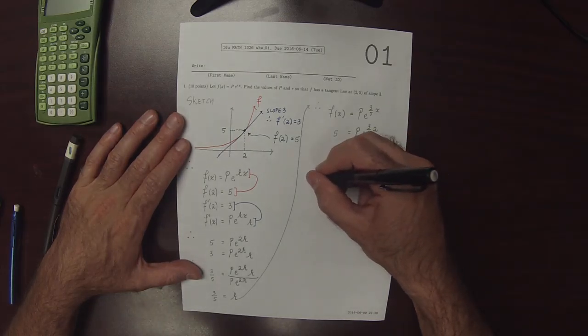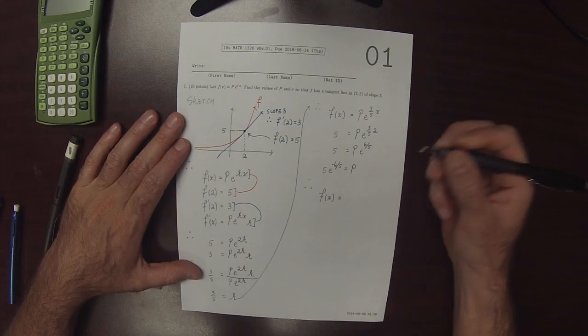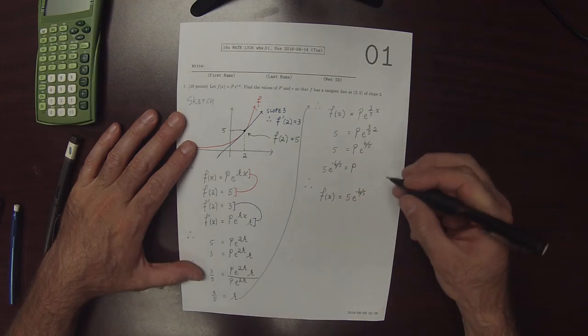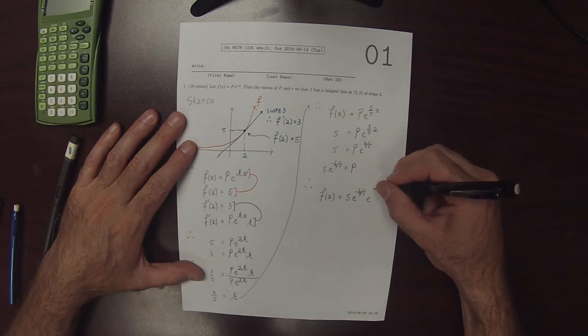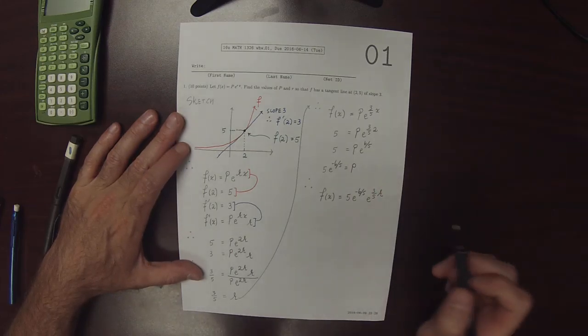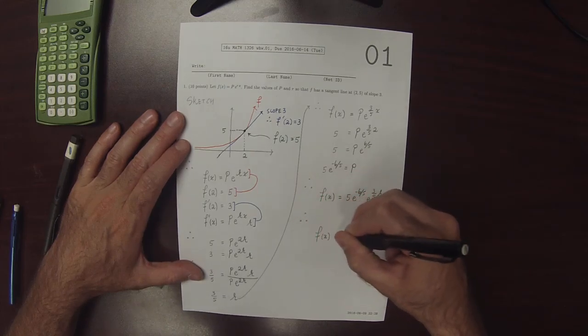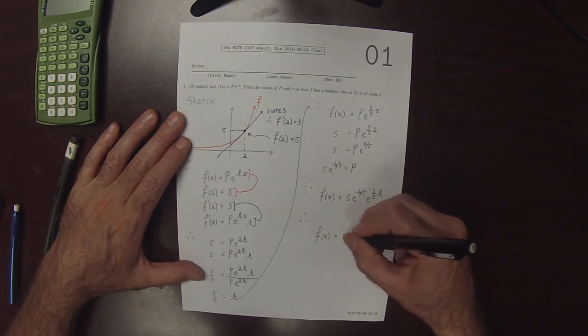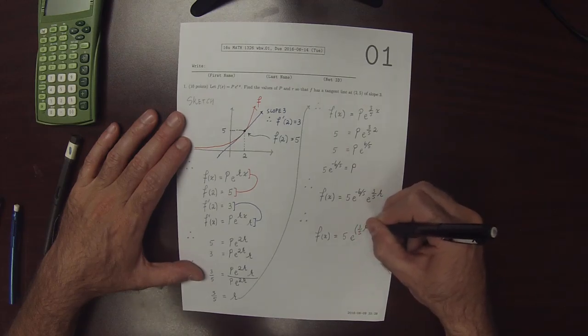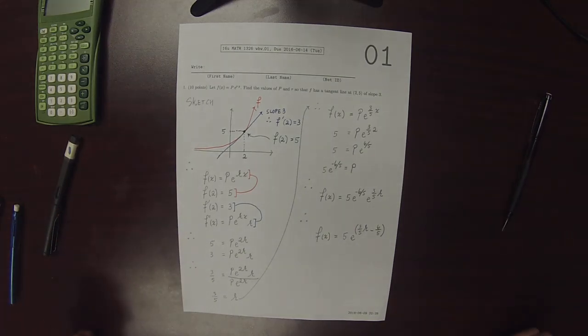So now we've determined p. And as a result, f of x is 5 e to negative 6 fifths e to 3 fifths x. And then we can combine those exponents to conclude 5 e exponential of 3 fifths x minus 6 fifths. And that's the answer to the exercise.